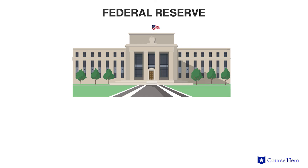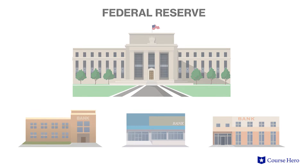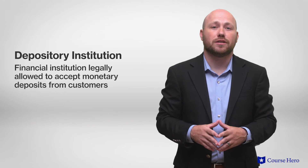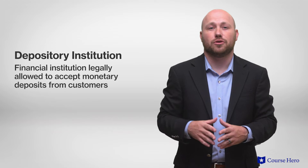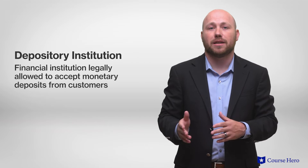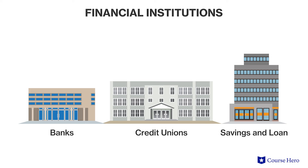Another central mission of the Federal Reserve is to function as a bank of depository institutions. A depository institution is a financial institution legally allowed to accept monetary deposits from customers. Banks, credit unions, and savings and loan associations are examples of financial institutions. Just as individuals' banks enable them to cash checks, the Federal Reserve performs a parallel function for the Federal Government and other large institutions.